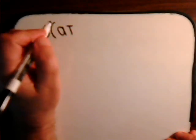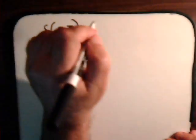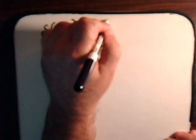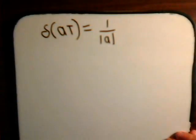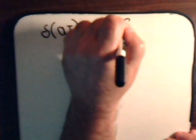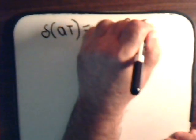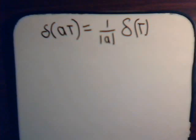That the Dirac Delta function of some constant times the variable t is equal to 1 over the absolute value of that constant times the Dirac Delta function of just t by itself.